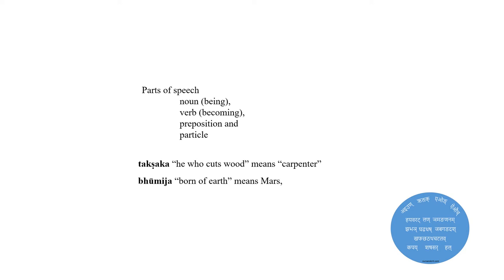Yaska names four parts of speech: noun (being), verb (becoming), preposition, and particle. He has a very detailed discussion on how names of objects are formed. He implies that a particular name comes to be associated with a particular object even though other objects can also have the same name. For example, the word Takshaka, meaning 'he who cuts wood,' means carpenter, though others also can cut wood.